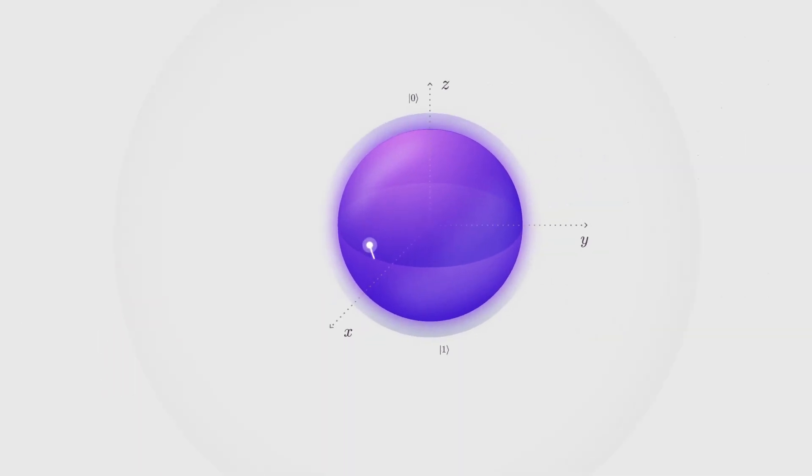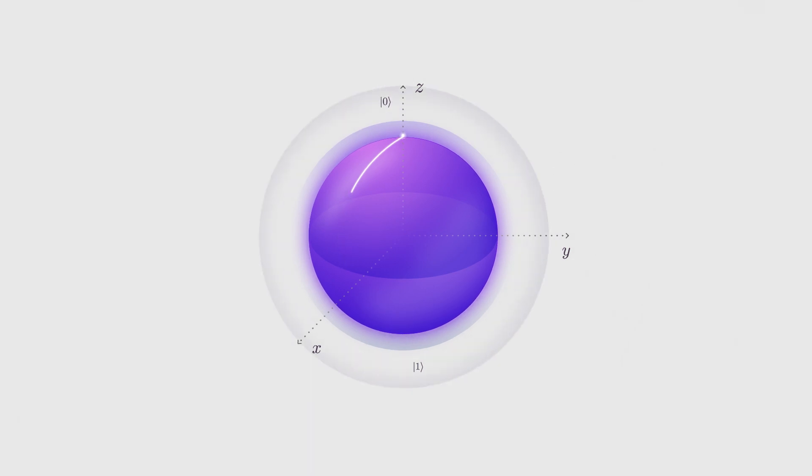In our graphical representation, a state on the equator of the sphere is actually an equal superposition of 0 and 1. Move towards the north pole, and it's a bit more heavily weighted to 0. Move the other way, and it's more heavily weighted to 1.